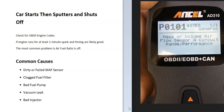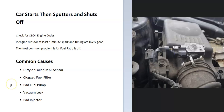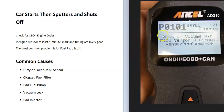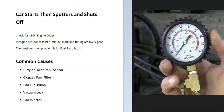First, a dirty or bad MAF sensor — this is located right up by the engine intake air filter. It basically reports back to the onboard computer how much air is going into the engine, and the computer uses this to get the air-fuel ratio mixture correct. If that sensor gets dirty, which is very common, or if it fails, it can cause issues. If you scan the computer, you'll get something like a P0101 or P0102, which points to that mass airflow sensor.